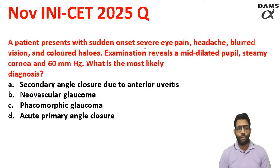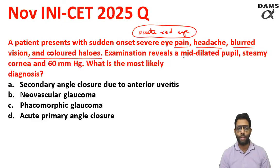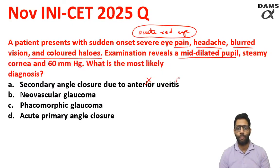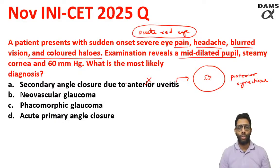A patient presents with sudden onset of pain, headache, blurred vision, and coloured halos. Acute red eye is a very hot topic — there are very few causes of emergency in ophthalmology. On examination, there is a mid-dilated pupil. Even if you don't know the diagnosis, if mid-dilated pupil is present, anterior uveitis cannot be the answer, because in anterior uveitis the pupil is small and constricted — a small, irregular pupil due to posterior synechia, which can lead to ring synechia and iris bombé pupil block mechanism.